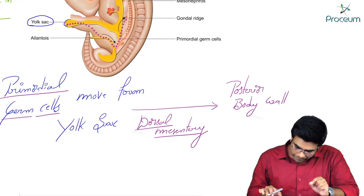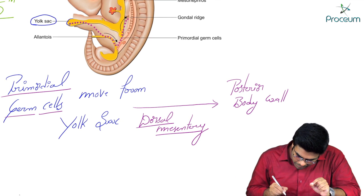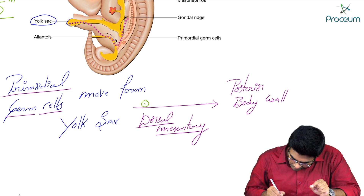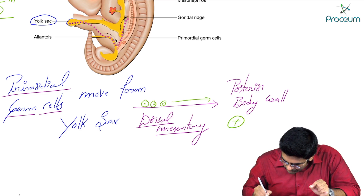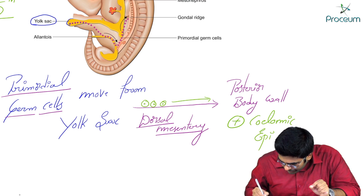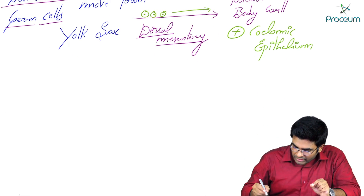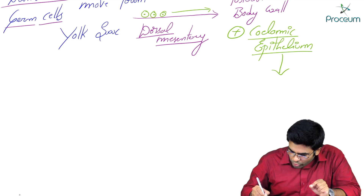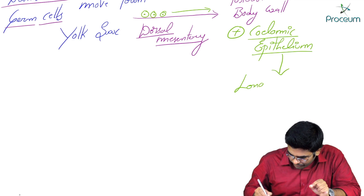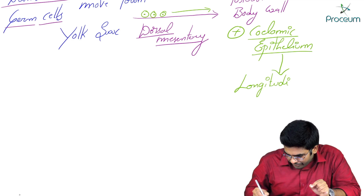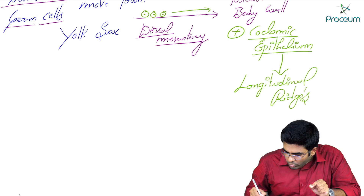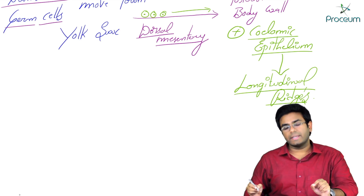These primordial germ cells coming to the posterior body wall will stimulate the coelomic epithelium to form longitudinal ridges. These longitudinal ridges are known as gonadal ridges.